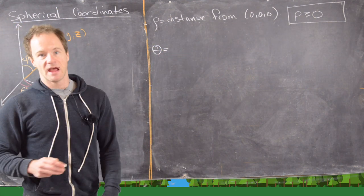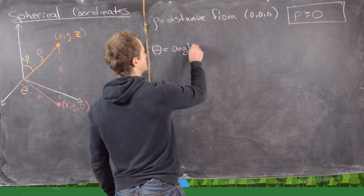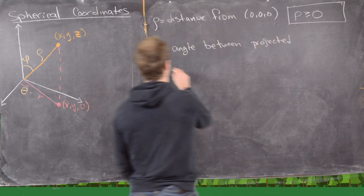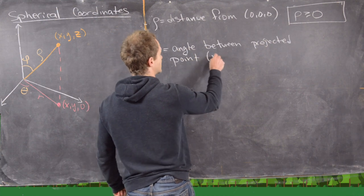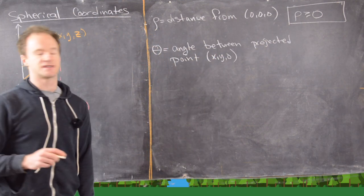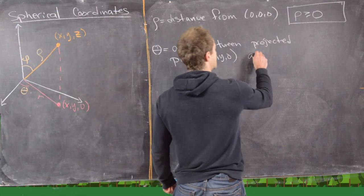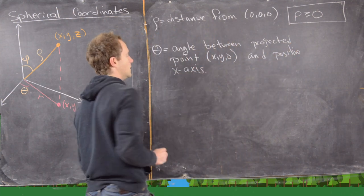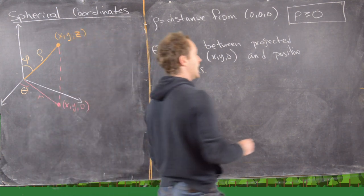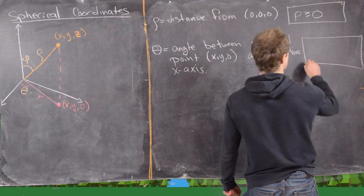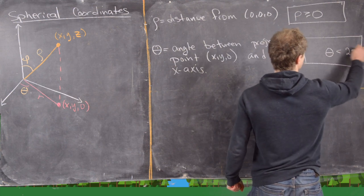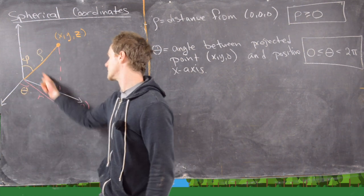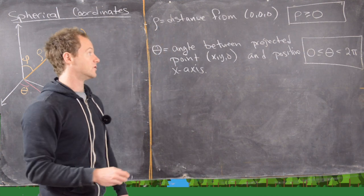Next is θ, and that is going to be the angle between the projected point onto the xy-plane — in other words the point (x, y, 0) — and the positive x-axis. This is like a polar coordinate, and as such θ should take values between 0 and 2π. We might as well not include 2π because that's the same thing as 0 — that's going around the circle in the xy-plane a full time.